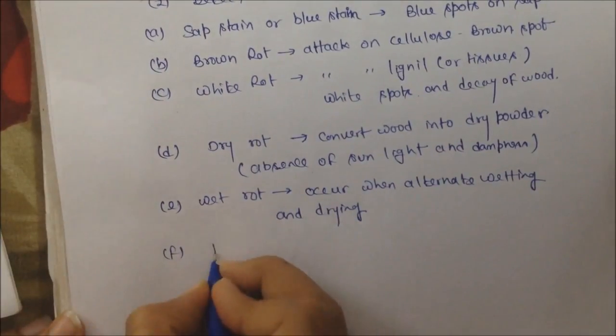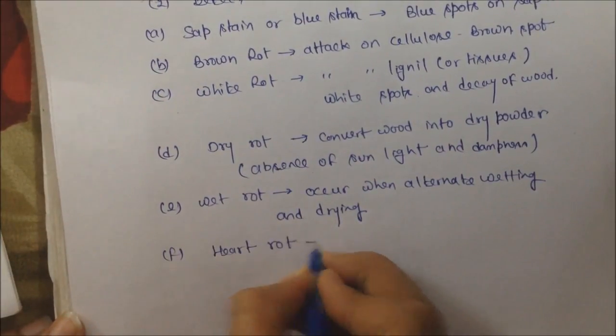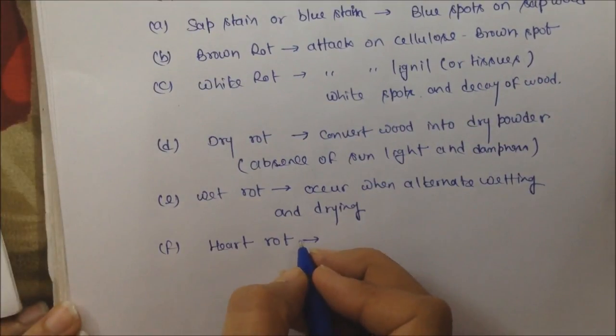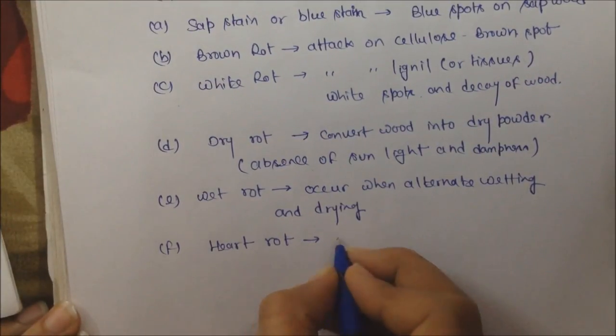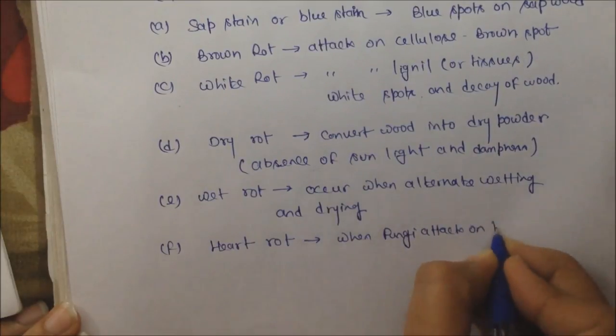Next is heart rot. When the branch is separated from the tree, the heartwood is exposed and fungi attack on the heartwood. That is called heart rot.